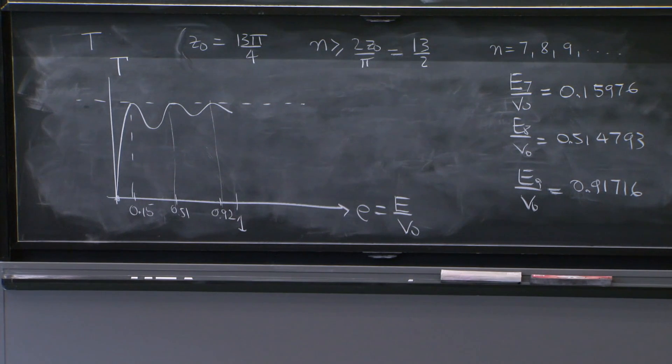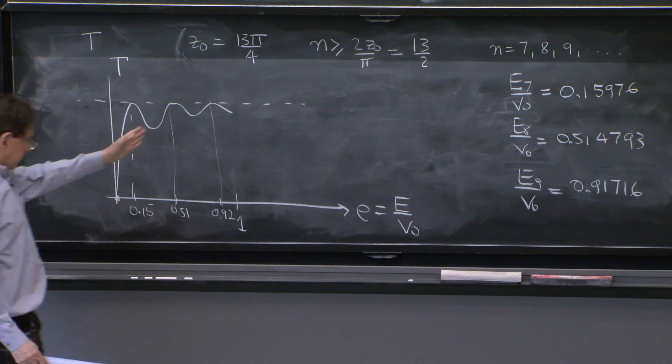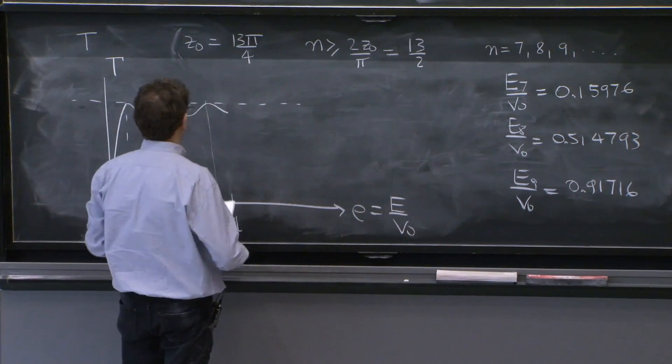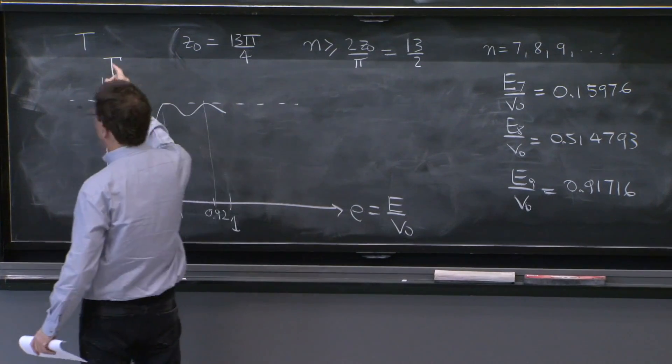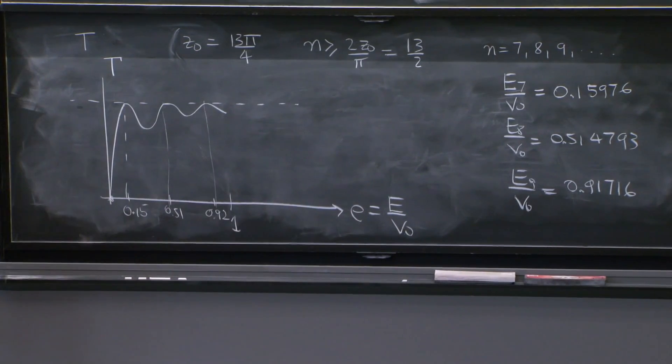So that's a typical graph for the transmission probability that it oscillates, and it reaches 1 at several points forever. The amplitude becomes smaller. So it's really overall tending to 1.